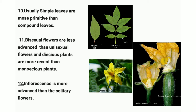Point eleven: bisexual flowers are less advanced than unisexual flowers. Bisexual flowers possess both stamens and carpels within the same flower. An example of a bisexual flower is the tomato flower.